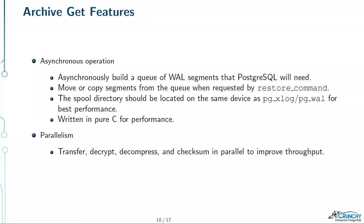I mention pg_xlog/pg_wal because I know there are people still running below Postgres 10. Archive get was the second thing we wrote in C — the notification process — and now archive get is end-to-end written in C as well. It uses the same mechanism; all the file copies and file transfers work exactly the same way in PG Backrest.